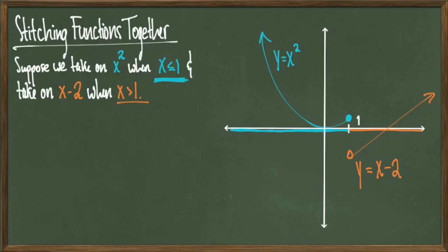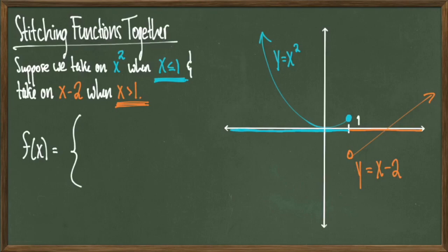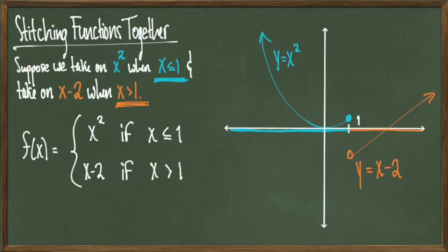Now that I have what this looks like on the graph, I can go ahead and start writing it as an explicit formula. I'm going to have all of my possible outcomes on the left and all of my conditions on the right. I'll call this function f of x, and I'll open a large left curly bracket. I know that when x is less than or equal to one I should get y equals x squared, so I write that in: f of x equals x squared if x is less than or equal to one. To finish off, f of x equals x minus two if x is greater than one. So this is how you write and graph the piecewise function that takes on x squared when x is less than or equal to one, and that takes on x minus two if x is greater than one. We've got a formula and we've got a graph.